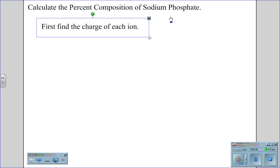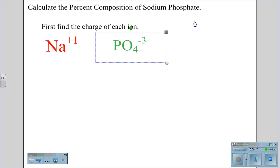The first thing you do is find the charge of each ion. From the back of the periodic table, we find that sodium has a plus one charge. Phosphate, PO4, has a negative three charge.